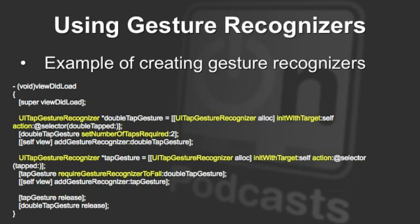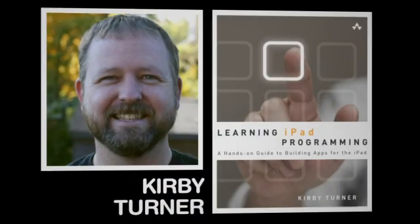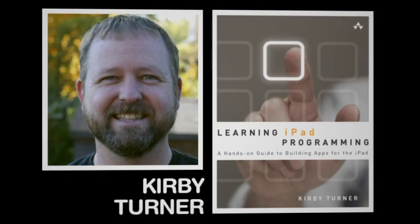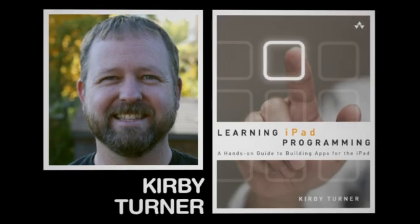Because you are wanting to detect a double tap, which is two taps, you then add it to your view and you're done. Now, when you run your application, if the user double taps that view, the recognizer will detect that gesture and report back to your application.